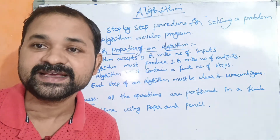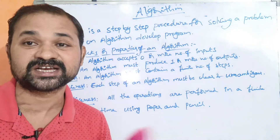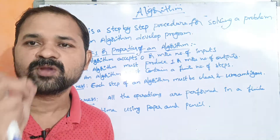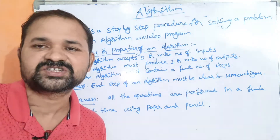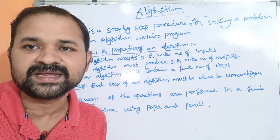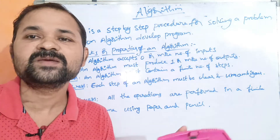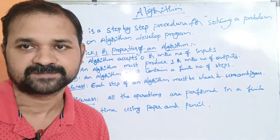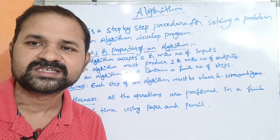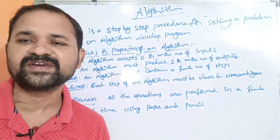Another definition is: an algorithm is a set of instructions for solving a problem. A set means a collection of instructions — it may be 10, 20, or 5 instructions, any number of instructions. If we can solve the problem, we will take steps to do so. A program means implementation of an algorithm using a programming language. It may be any language — C, C++, Java — and the algorithm can be implemented in these languages.